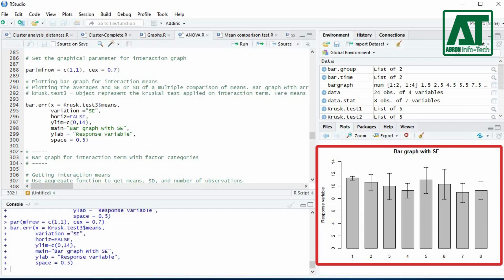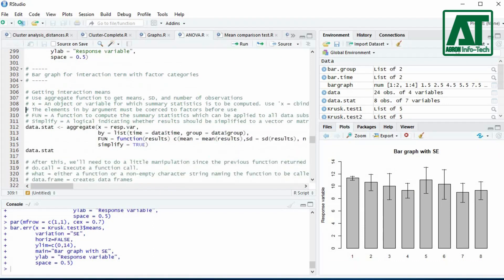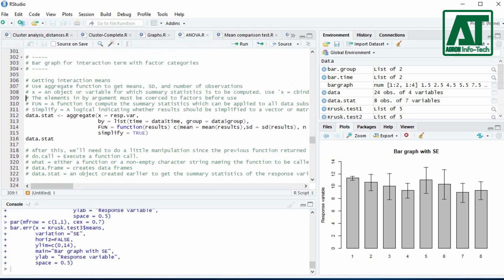However, the graph does not look decent. We need to plot bar graph for interaction term with factor categories.